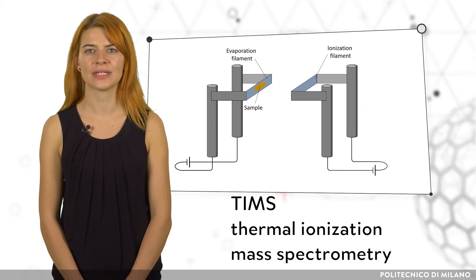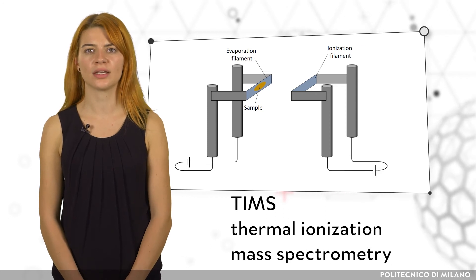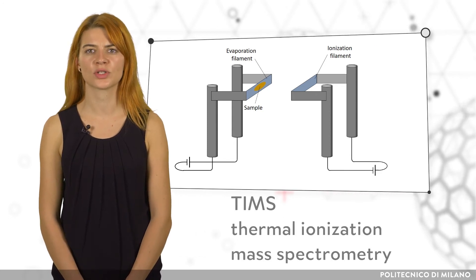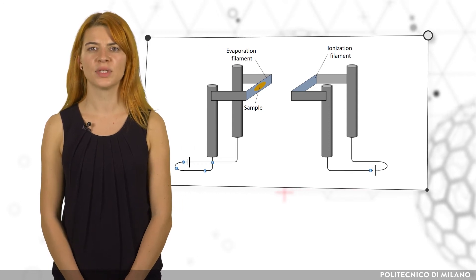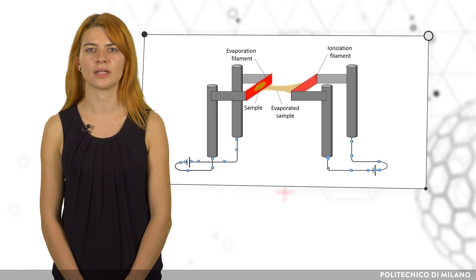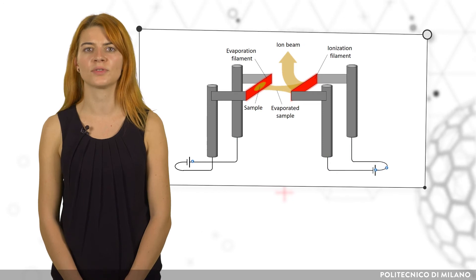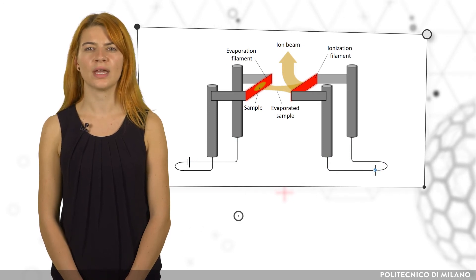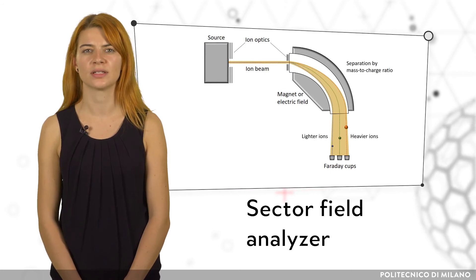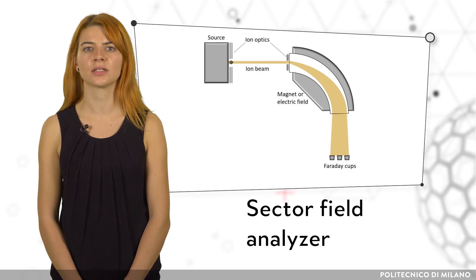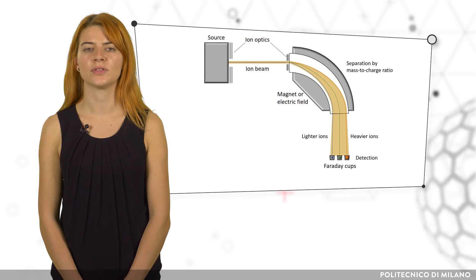For a very precise determination of isotope ratios, thermal ionization mass spectrometry (TIMS) is particularly suitable, as it is a two-stage separation. During ionization, a separation corresponding to the ionization energy of the analytes is achieved. The sample is heated on a metal filament by an electric current until atoms are ionized and pass into the high vacuum of the sector field analyzer, where the ions are separated by deflection in a magnetic or electric field. The radius of the trajectory is dependent on the mass-to-charge ratio, since light ions are deflected more than heavy ones.